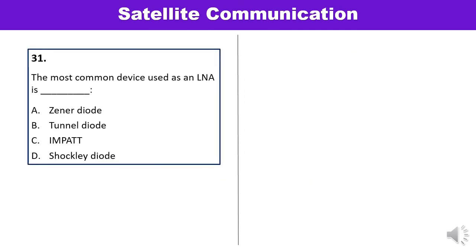Question 31: The most common device used as a low noise amplifier is — zener diode, tunnel diode, impact diode, or radio amplifier? A low noise amplifier must provide a relatively flat response over the frequency range of interest. The tunnel diode is a highly sensitive and low noise device, making it the commonly used device as a low noise amplifier. Answer B is correct.